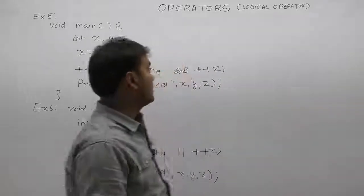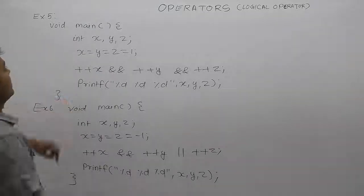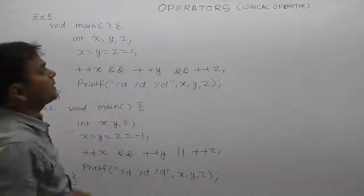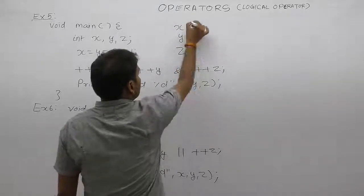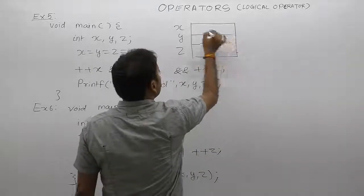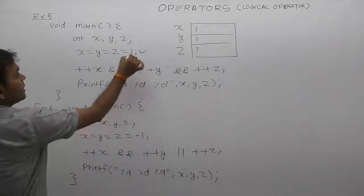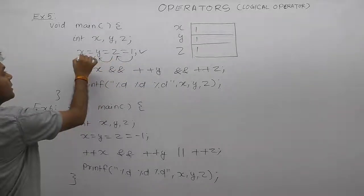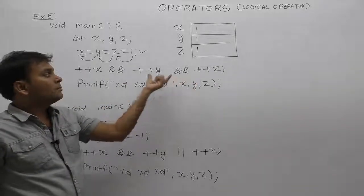The next example regarding logical operators — concentrate on example five. In this case, three variables are declared: x, y, and z, each allocating memory space. First, one is assigned to z, then z becomes one; z is assigned to y, and similarly y is assigned to x.